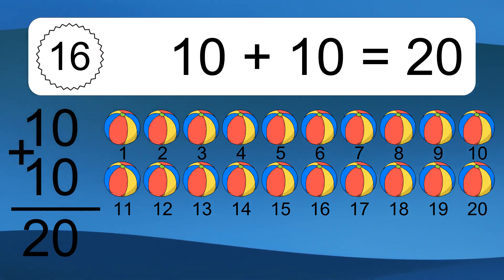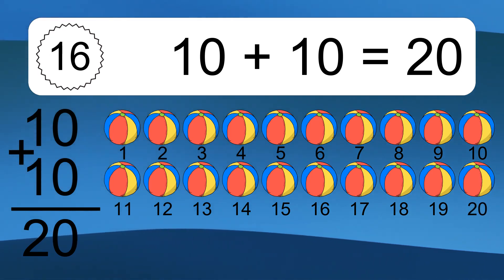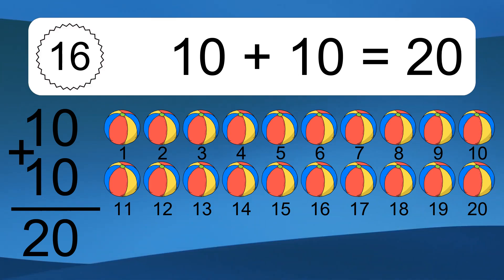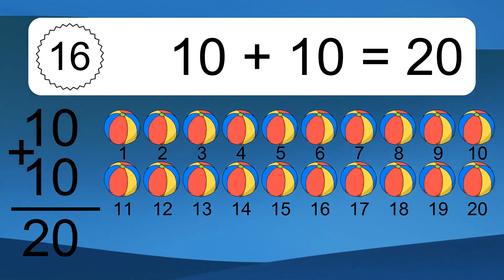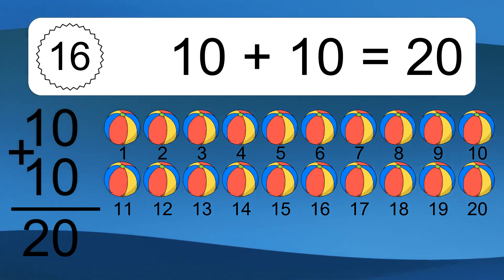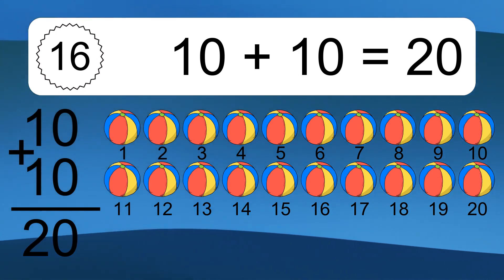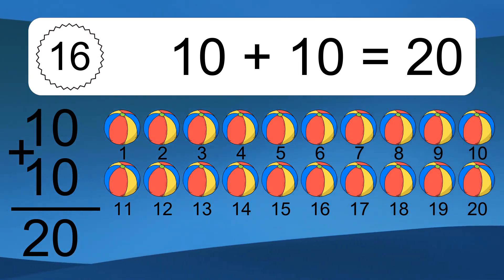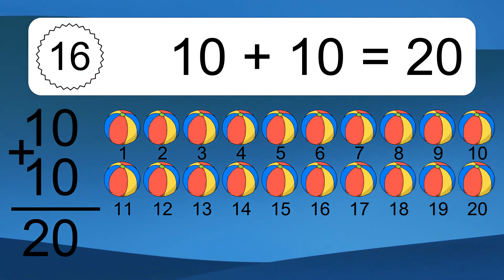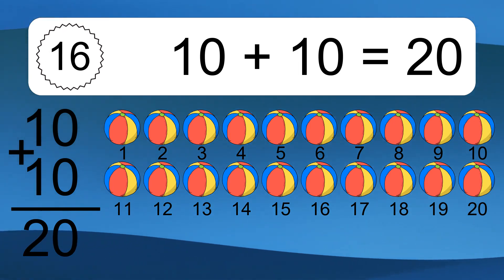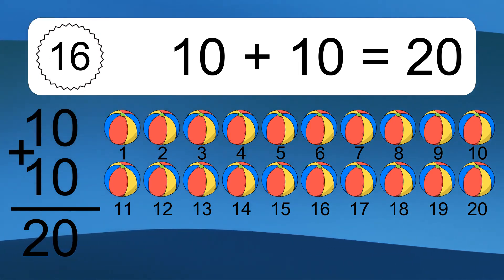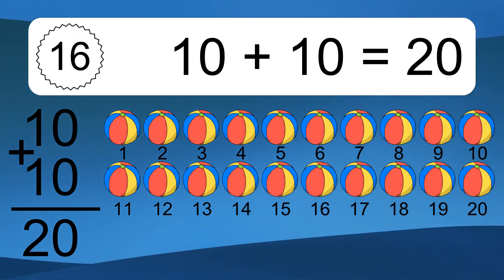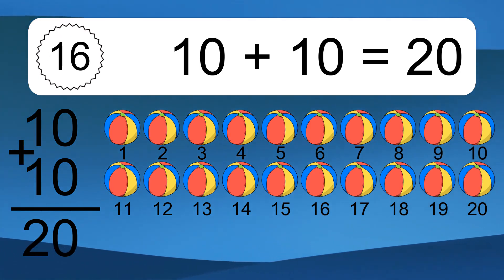Let's count it: one, two, three, four, five, six, seven, eight, nine, ten, eleven, twelve, thirteen, fourteen, fifteen, sixteen, seventeen, eighteen, nineteen, twenty.